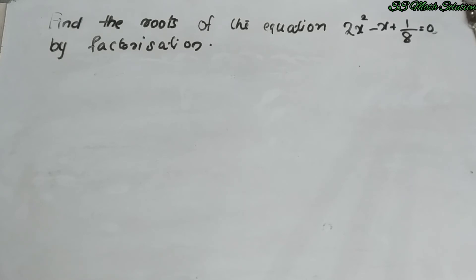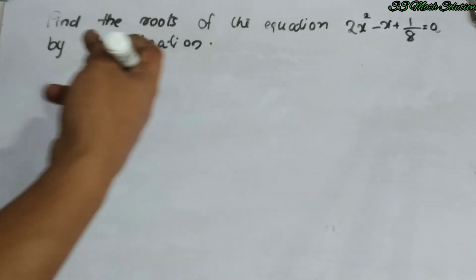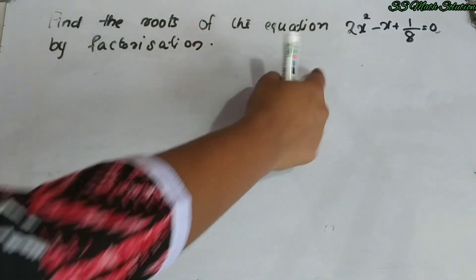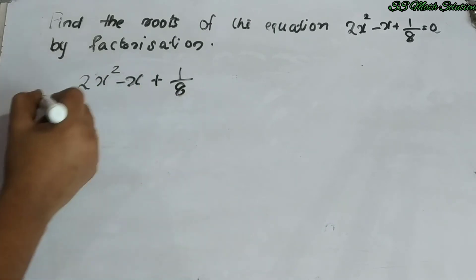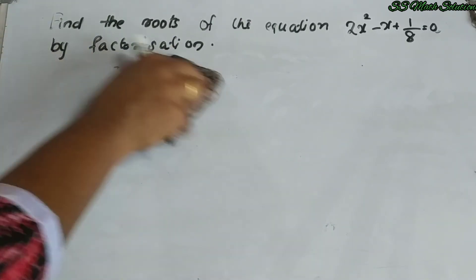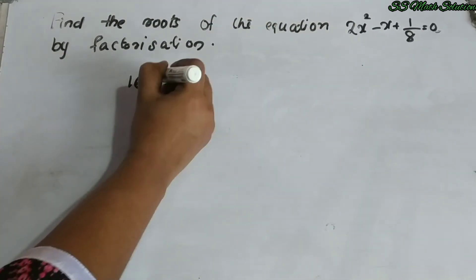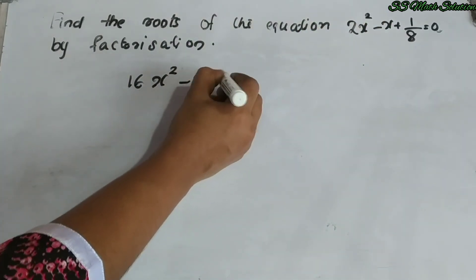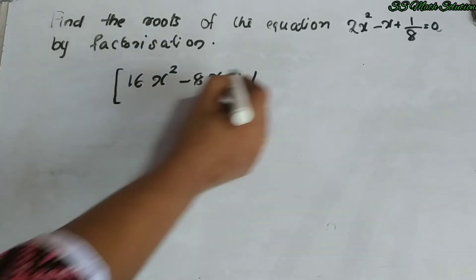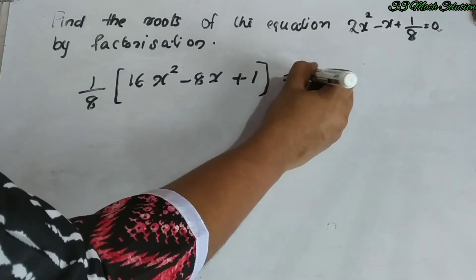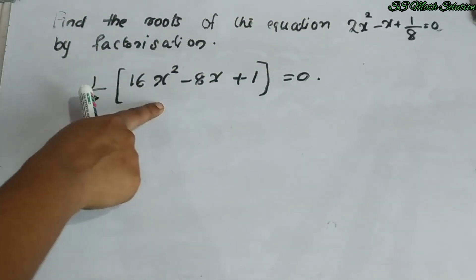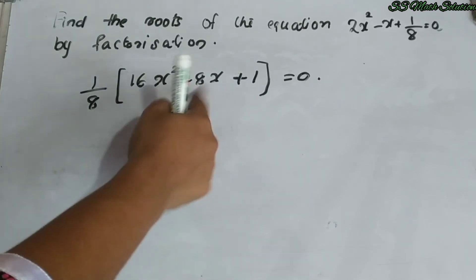The next question is: find the roots of 2x² − x + 1/8 = 0 by factorization. When we have a fraction in the equation, we take the LCM first. The LCM of 8: multiplying through by 8 gives 16x² − 8x + 1 = 0. We write this as (1/8)(16x² − 8x + 1) = 0, and after multiplying through the 8 cancels, giving us the new equation 16x² − 8x + 1 = 0.